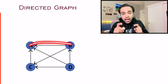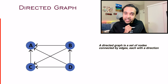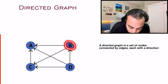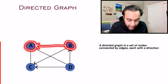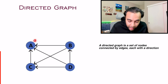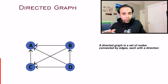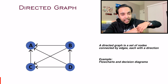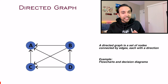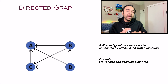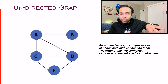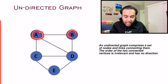Until now edges had no directions, meaning you could go from A to B and also from B to A. But if you define directions on your edges, that is known as a directed graph. It means that when you define an edge from B to A with a specific direction, you can go from B to A but you cannot go from A to B. Real-world examples include flowcharts or decision diagrams, where you go in a certain direction but there is not necessarily a way backwards.